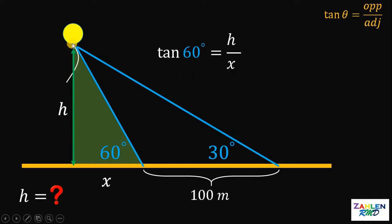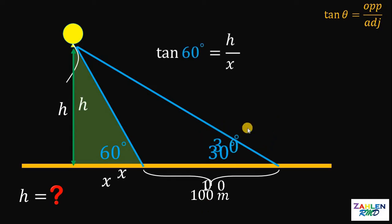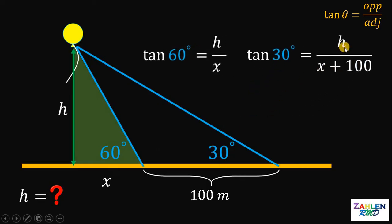Now let's consider the whole right triangle. We have 30 degrees, the opposite side is h, and the adjacent side must be x plus 100. Therefore, tangent 30° = h/(x + 100). So h is the opposite side of 30°, and x + 100 is the adjacent side of 30 degrees.